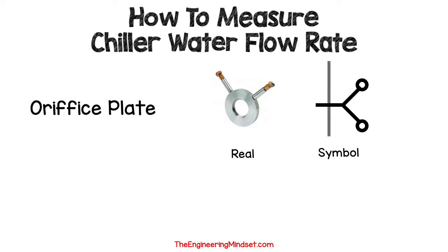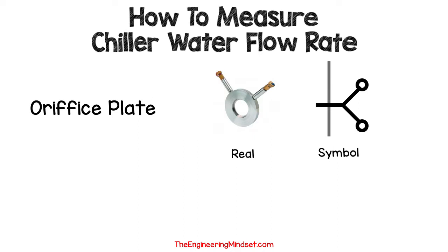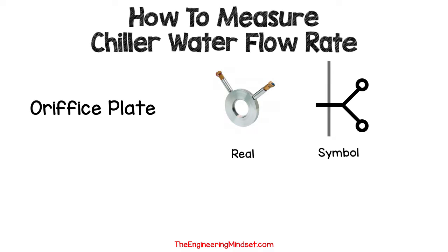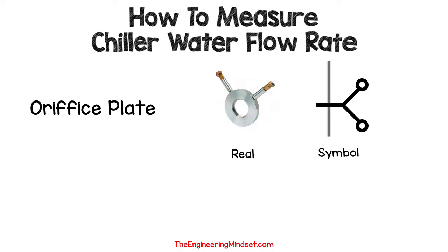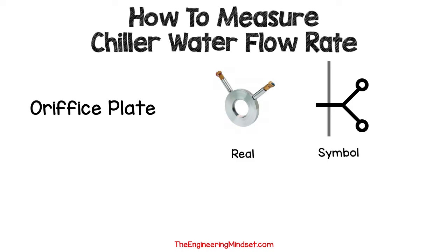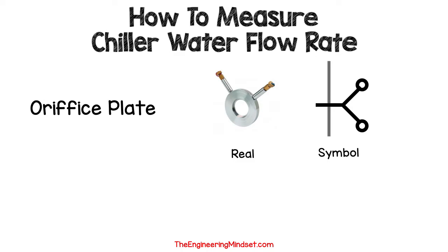To measure the flow rate we need to locate an orifice plate in the system. These will look something like this — the flange face won't be visible when connected to the pipe, but you can spot these because they have two pipes sticking out of them. On the engineering schematic drawing you should see them represented by a specific symbol. Do check the drawing legend to make sure.